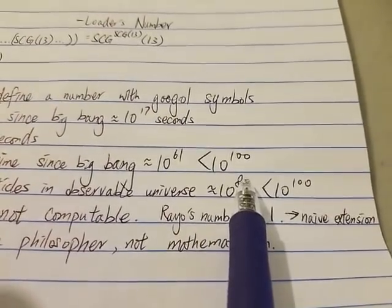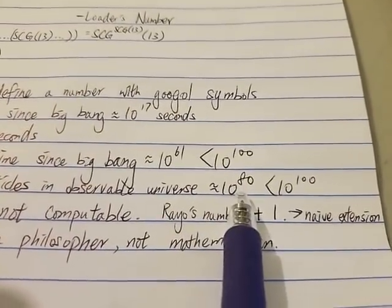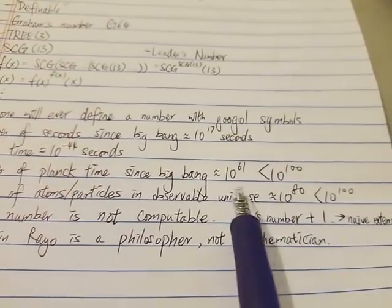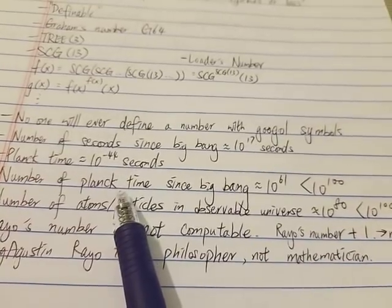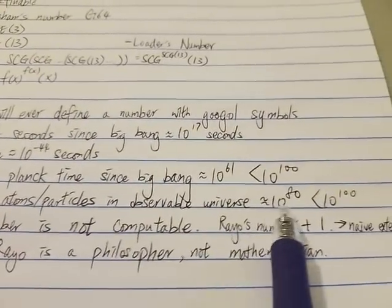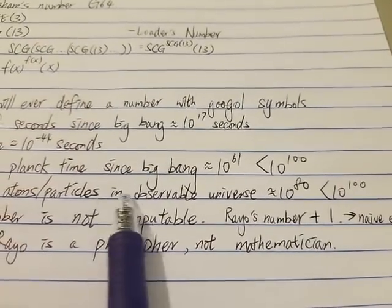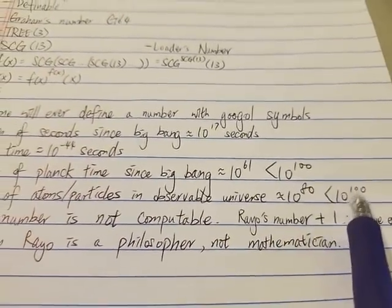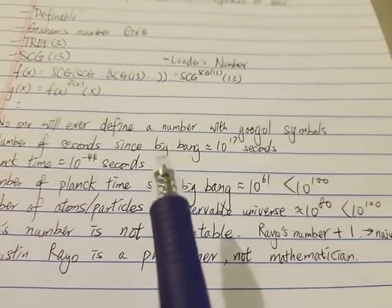But of course, this is smaller than a googol. That means, even if you can write each symbol on each atom or particle, you will run out of particles in the universe before you can finish writing down your number or your function.